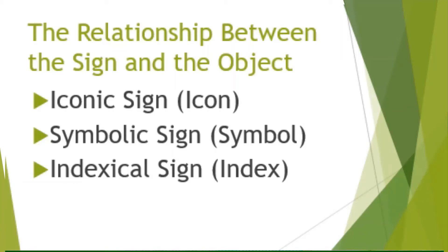The relationship between the sign and the object results in three modes. The first one, the iconic sign. The second one, the symbolic sign. And the third one, the indexical sign.